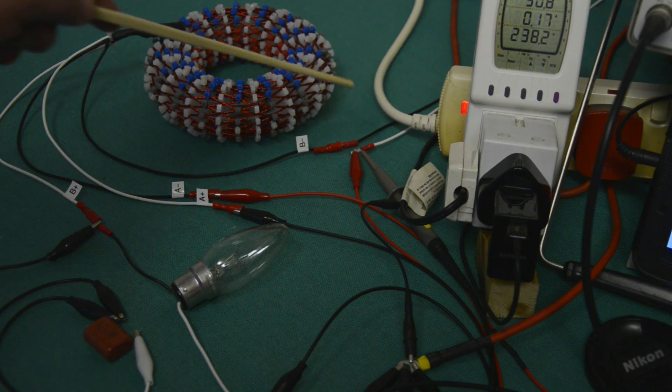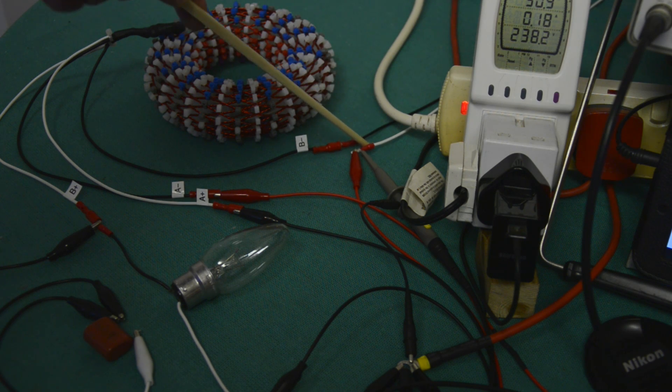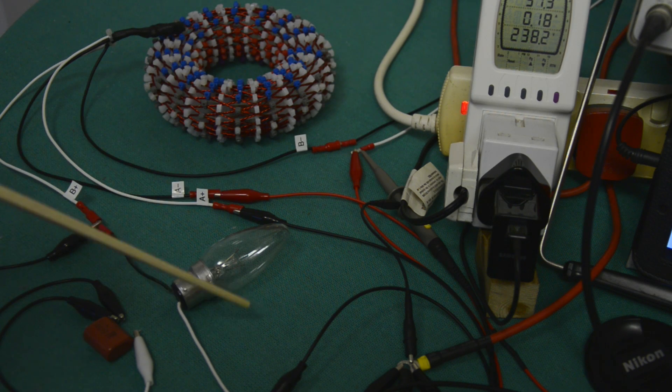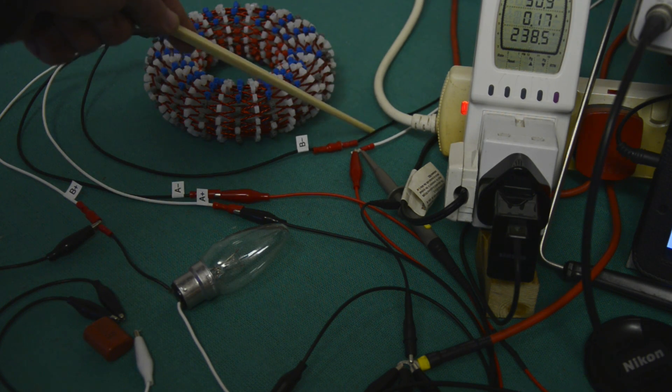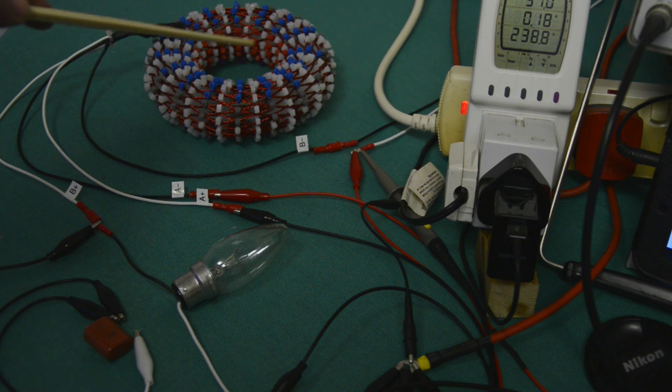So to that end we start with the positive side of a speaker output taken from an audio amplifier, that's this white lead here. Now that connects to the A plus of the coil via the first of two RMS multimeters. The negative side of that same speaker output is connected directly to the B minus side of the coil.